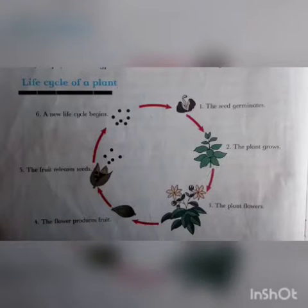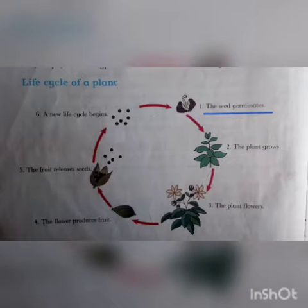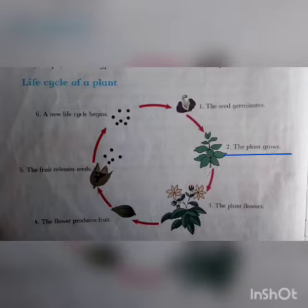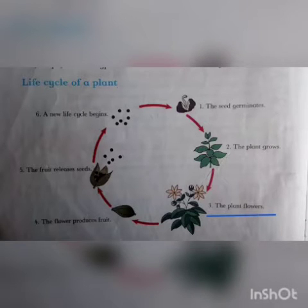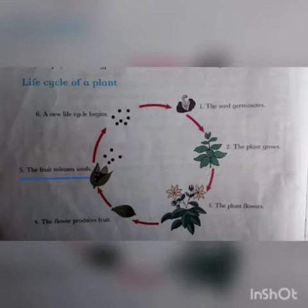Life Cycle of Plants — پودے کی زندگی کا دورانیہ۔ Number 1: The Seed Germinates — بیج اگنا شروع ہوتا ہے۔ Number 2: The Plant Grows — پودہ بڑھتا ہے۔ Number 3: The Plant Flowers — پودے پر پھول آتے ہیں۔ Number 4: The Flower Produces Fruit — پھول پھل پیدا کرتا ہے۔ Number 5: The Fruit Releases Seeds — پھل بیج دیتا ہے۔ Number 6: A New Life Cycle Begins — زندگی کا نیا دورانیہ شروع ہوتا ہے۔